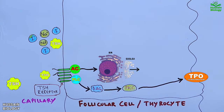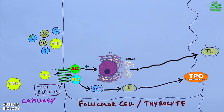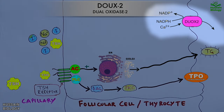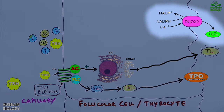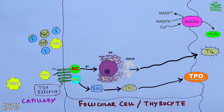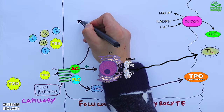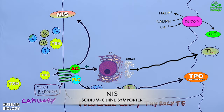On the other hand, active adenyl cyclase mediates signaling that drives synthesis of the thyroglobulin molecule from the endoplasmic reticulum through the Golgi, and finally delivers the thyroglobulin molecule into the colloid. Upon TSH signaling, DUOX2 is also synthesized and expressed on the apical surface of the follicular cell, which generates and transports hydrogen peroxide from the follicular cell into the colloid.